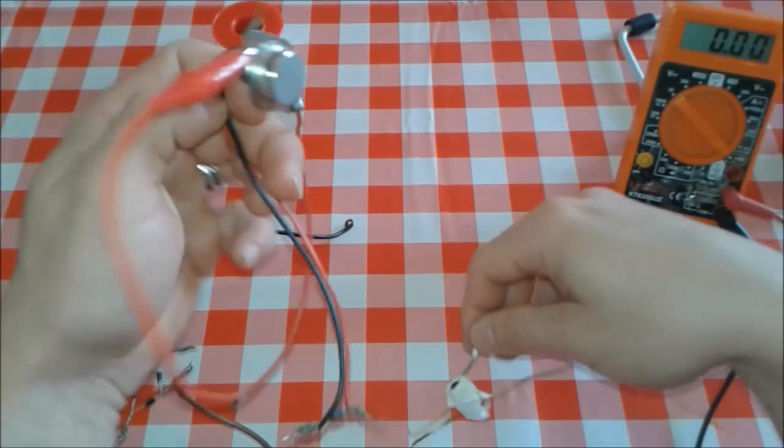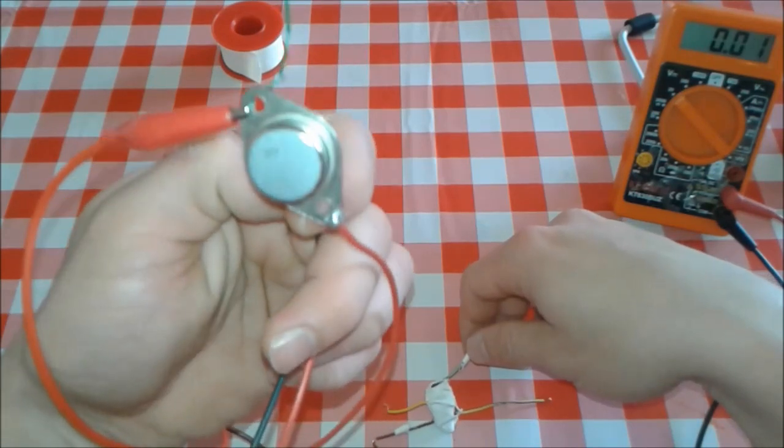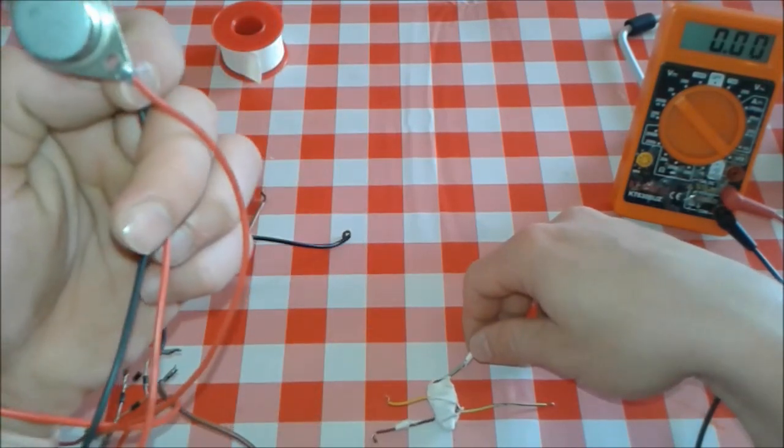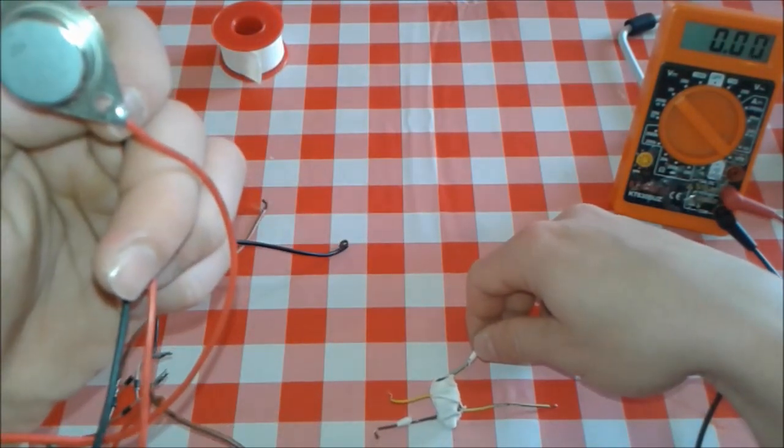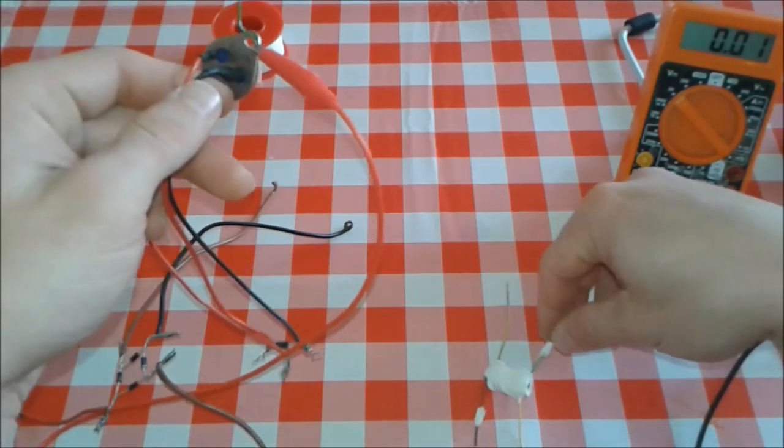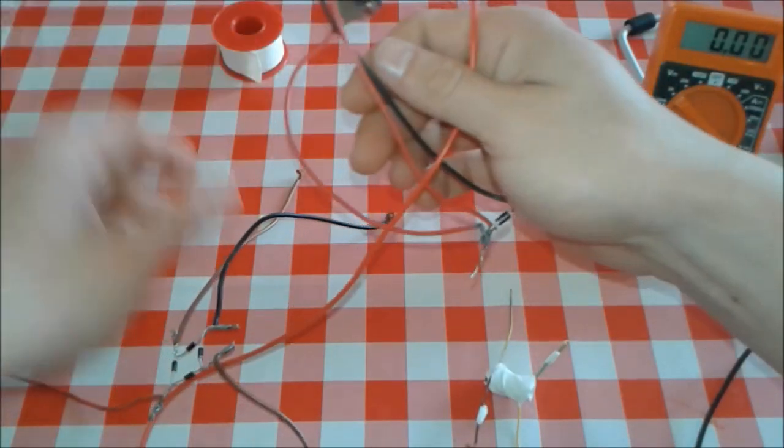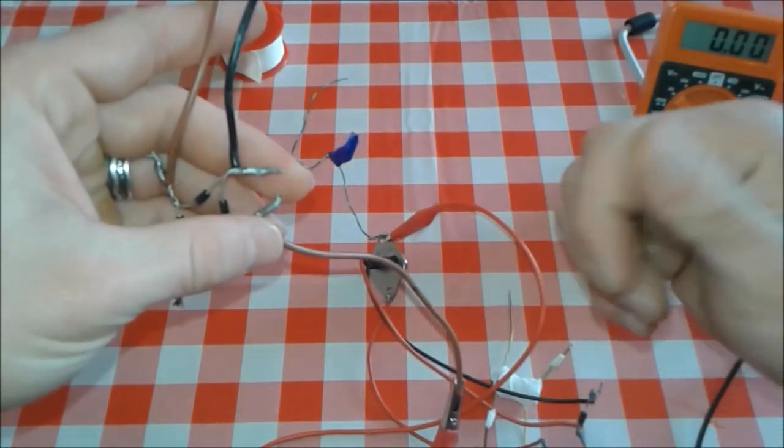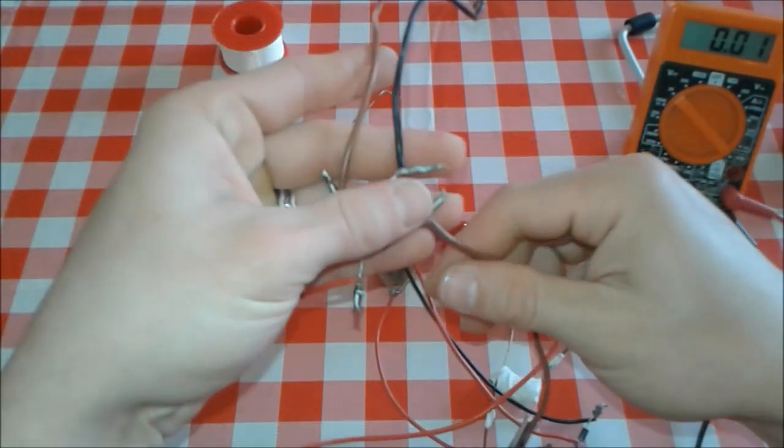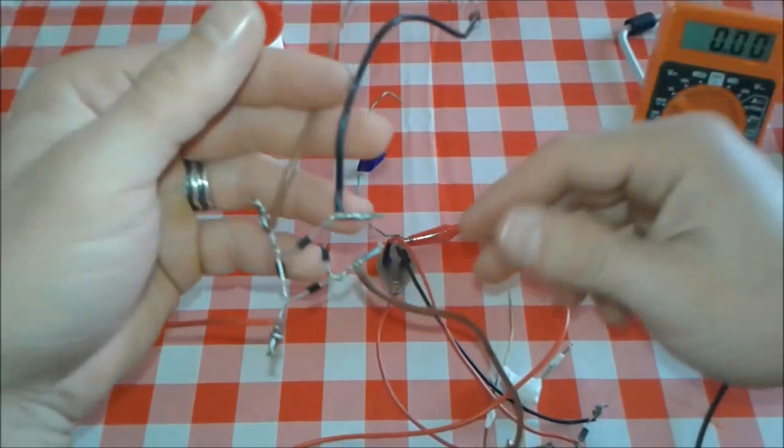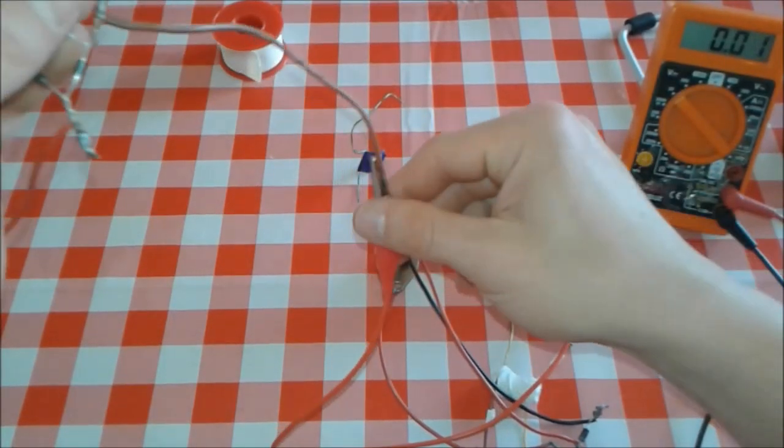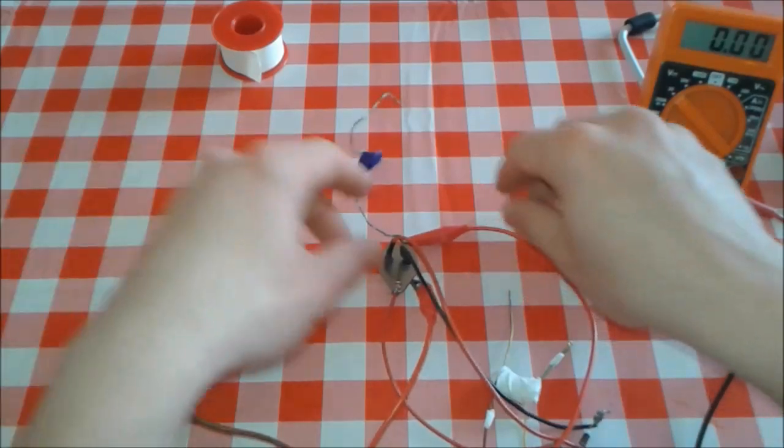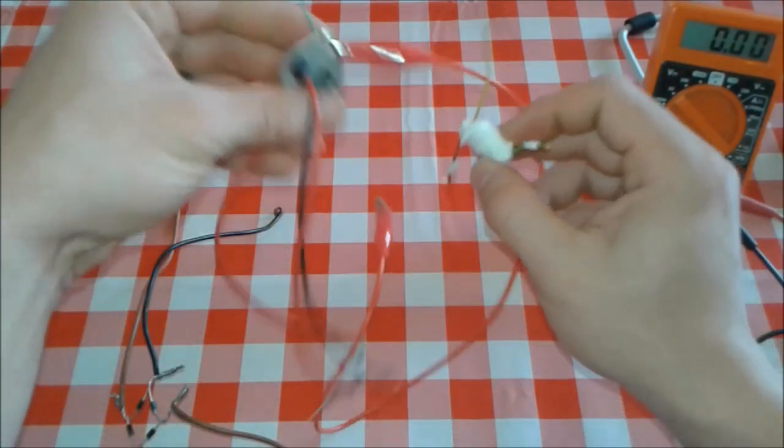We can use for this one the old trusty 2N3055, it's a NPN transistor. And a bridge rectifier. If you don't know what a bridge rectifier is, check out my other video how to make it, or google it and you're gonna find it. Very easy.